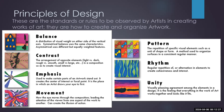Balance refers to the distribution of visual weight within an artwork. There are three types: symmetrical balance, where elements are even on both sides of the central axis creating stability and harmony; asymmetrical balance, where visual weight is distributed unevenly but still achieves equilibrium through careful arrangement of elements with varying size, color, texture, and shape; and radial balance, where elements radiate outward from a central point, creating a circular or spiral composition. Emphasis, also known as focal point, draws attention to a particular area or element, achieved through contrast, isolation, placement, size, or color.